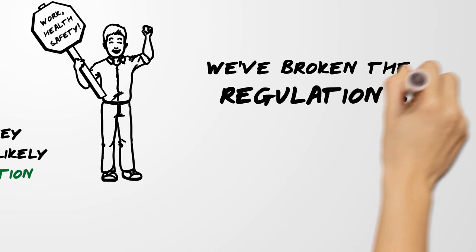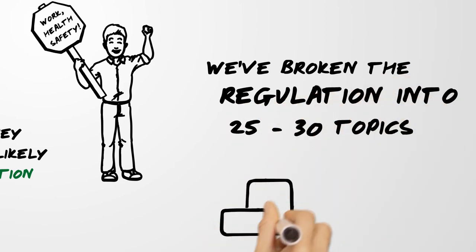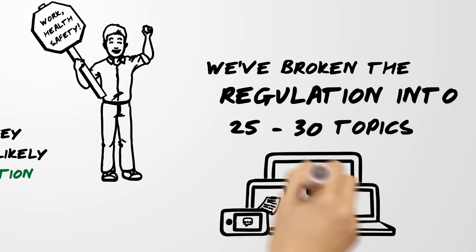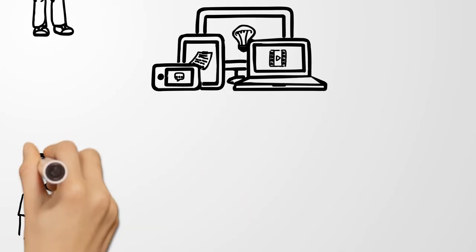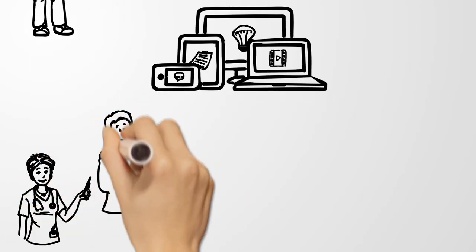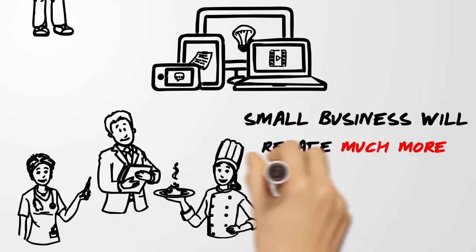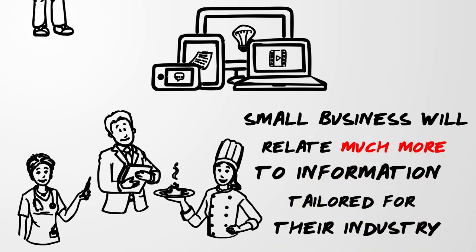We've broken down the regulation into about 25 to 30 topics and we're developing content to deliver against the model that they've asked for. We're also going to be introducing a layer of industry relevance because we know from some other research that small businesses in particular will relate much more to information if it feels like it's for them or at least tailored for their industry.